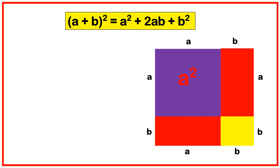The third part is also a rectangle with dimensions b by a, so its area is ab. The fourth part is a square with sides b by b, so its area is b square.